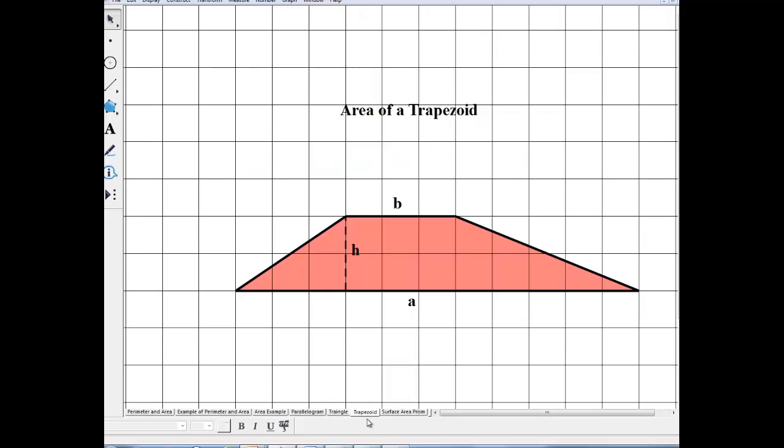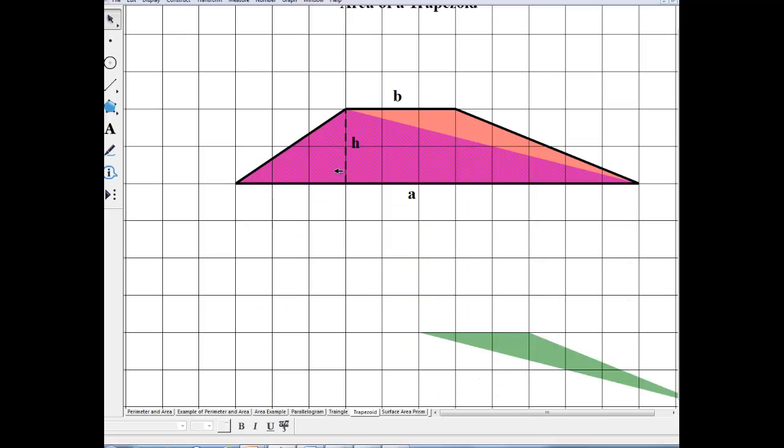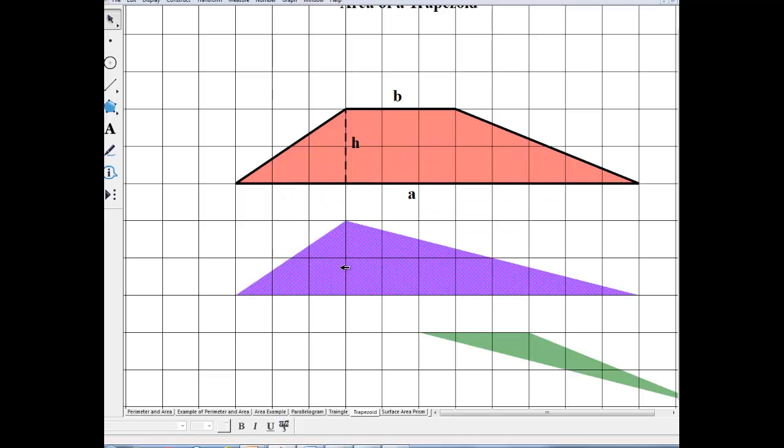Let's look at trapezoid. Remember, trapezoid has exactly one pair of parallel lines. So area of this triangle is half base times height. And so that's the base and that's the height for this triangle. All right, so take a look at this triangle. So this triangle has the same height as this one, because if I move that height here, look. You see how it's the same?